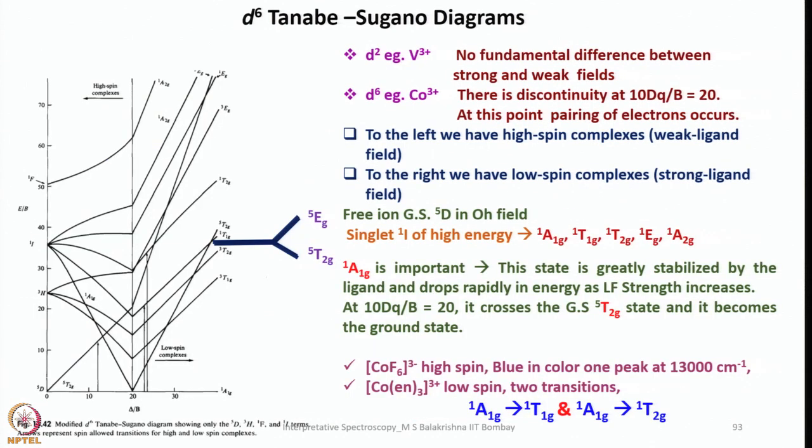For example, here I have given for d6 system, d2 V3+, no fundamental difference between strong and weak field ligands. And d6 cobalt 3+, there is discontinuity at 10Dq/B equals 20. At this point, pairing of electrons occurs, meaning we're moving from weak field to strong field, so pairing starts. To the left we have high spin complexes, weak field. To the right we have low spin complexes, strong field ligands.